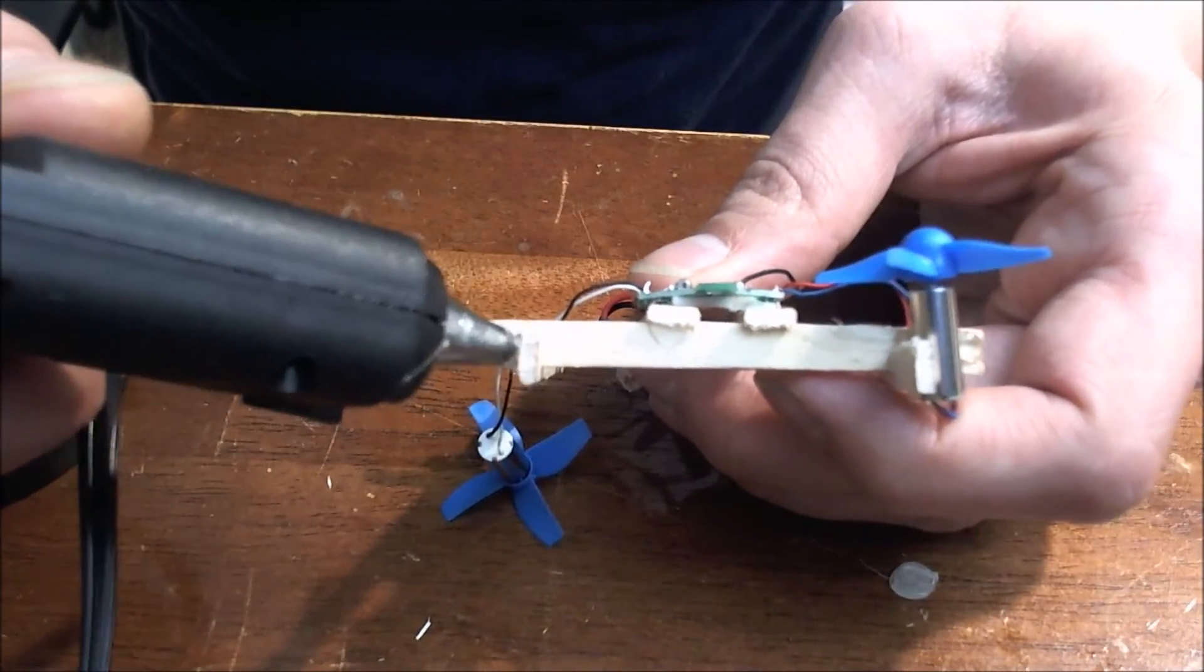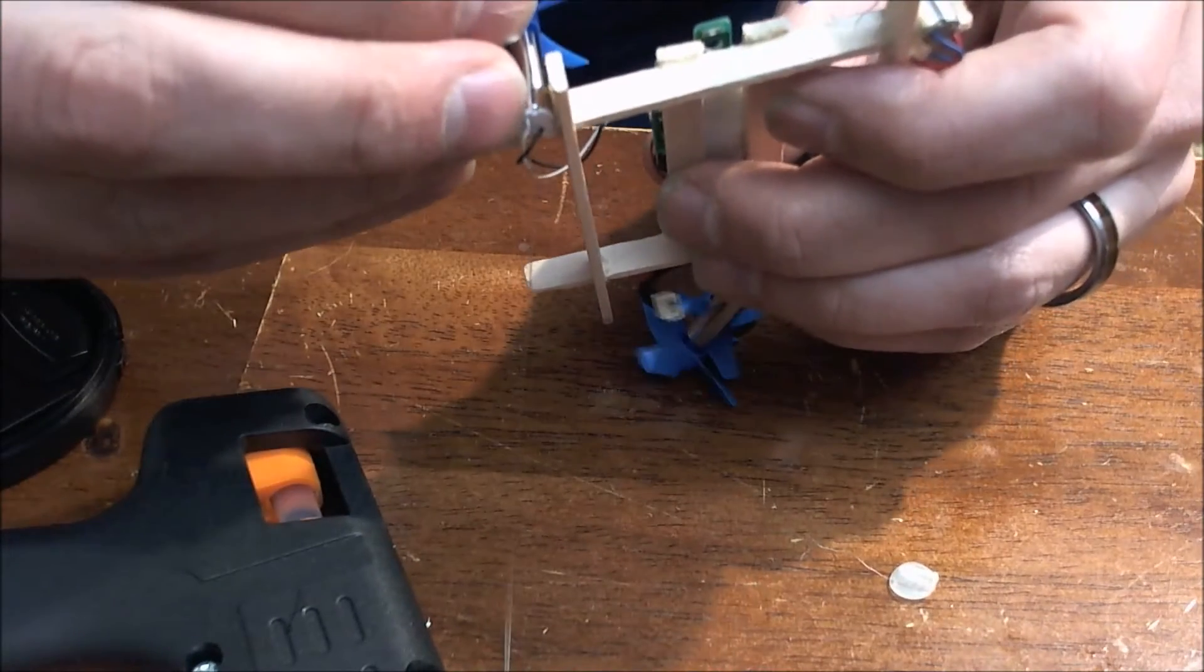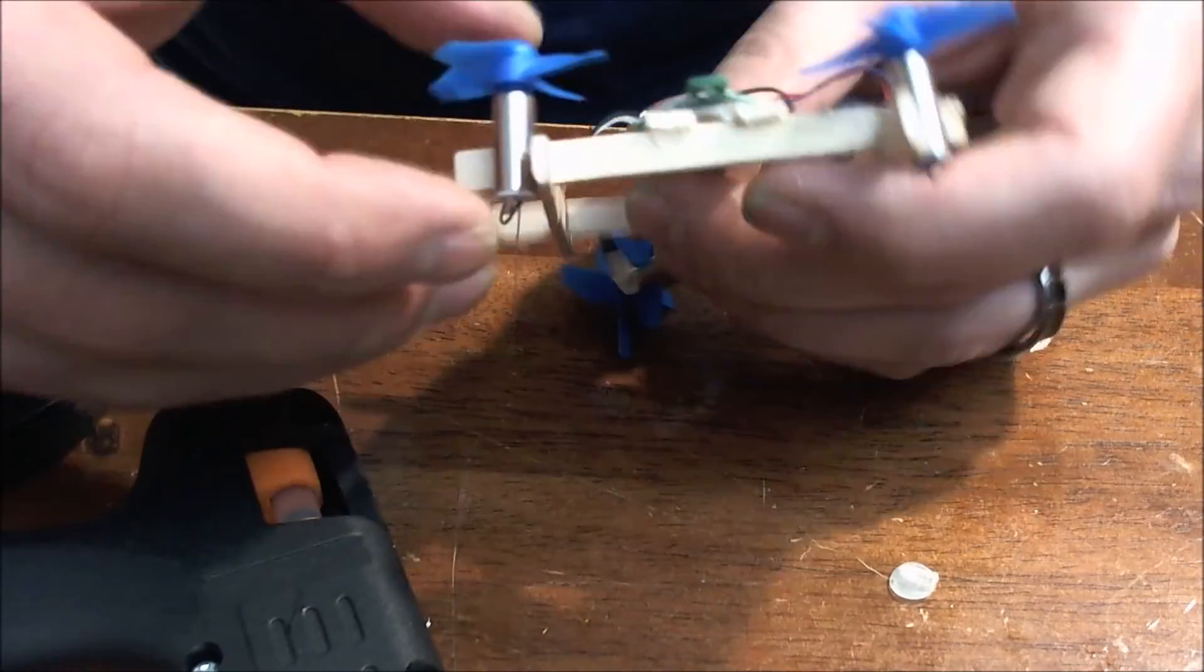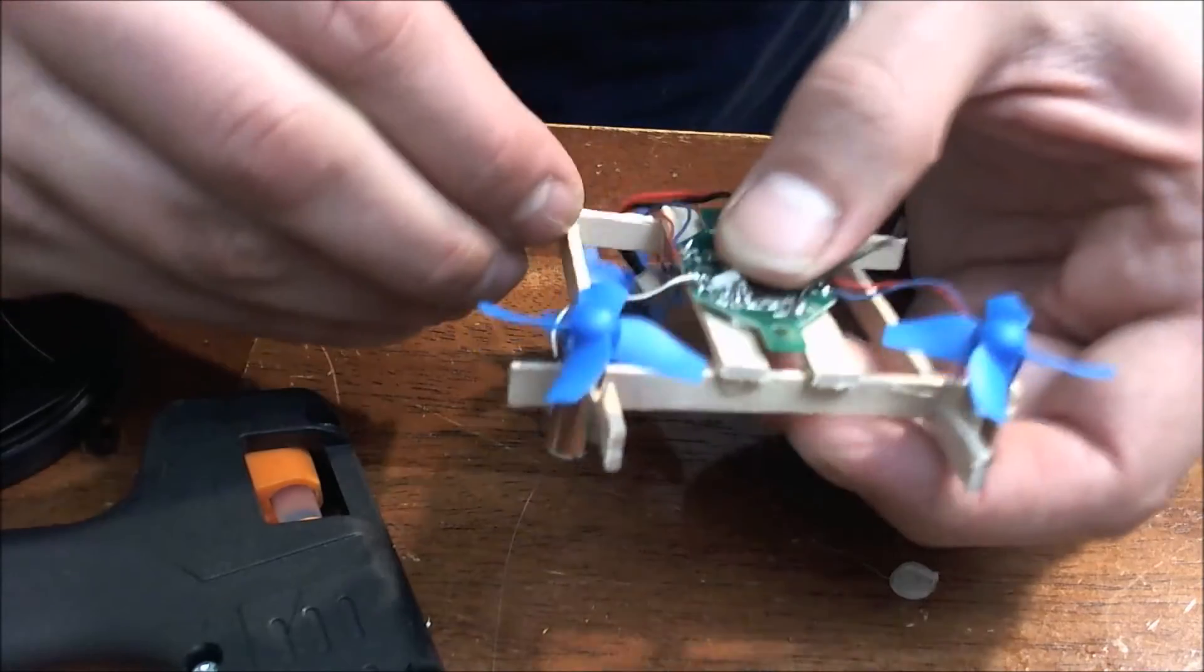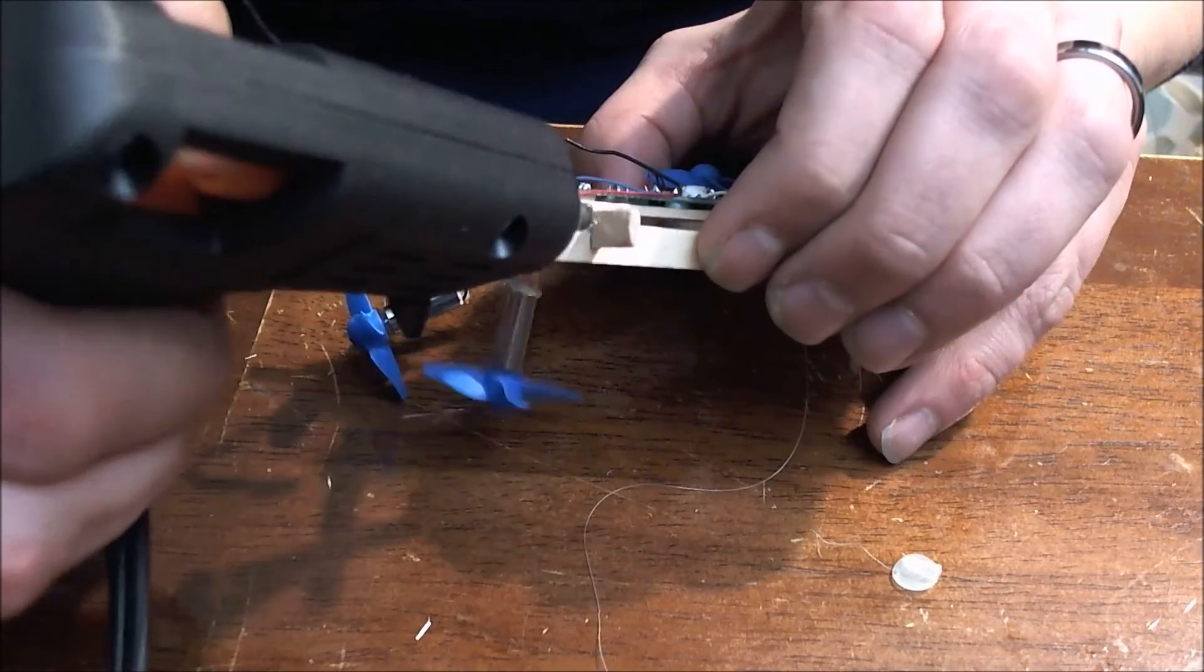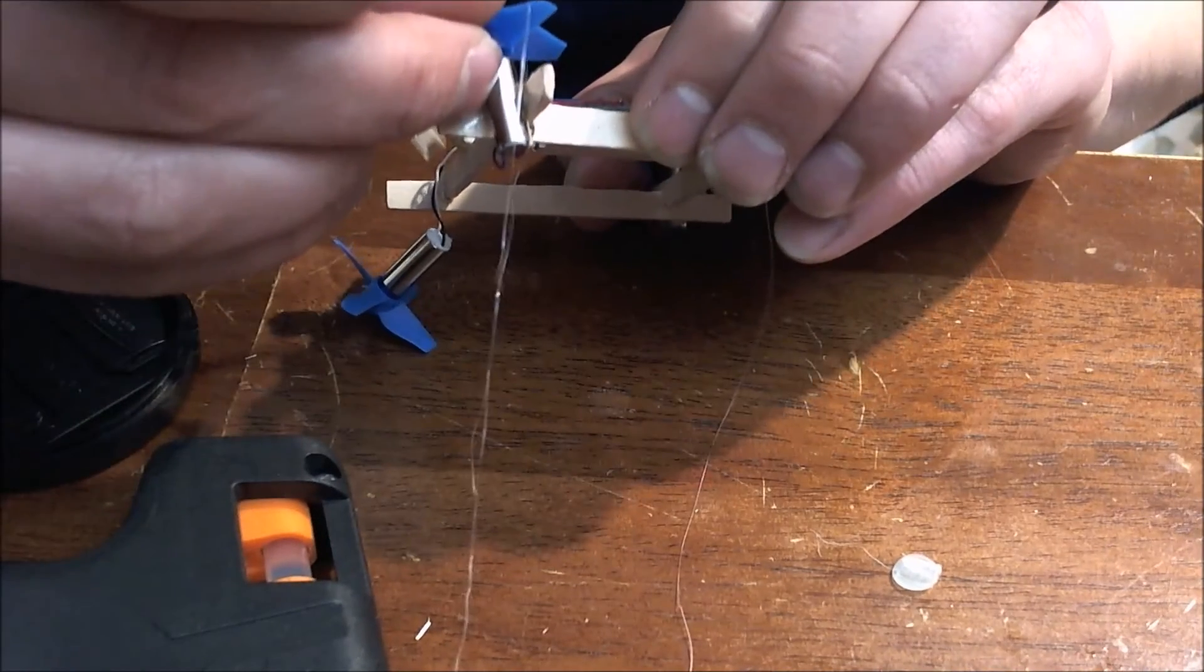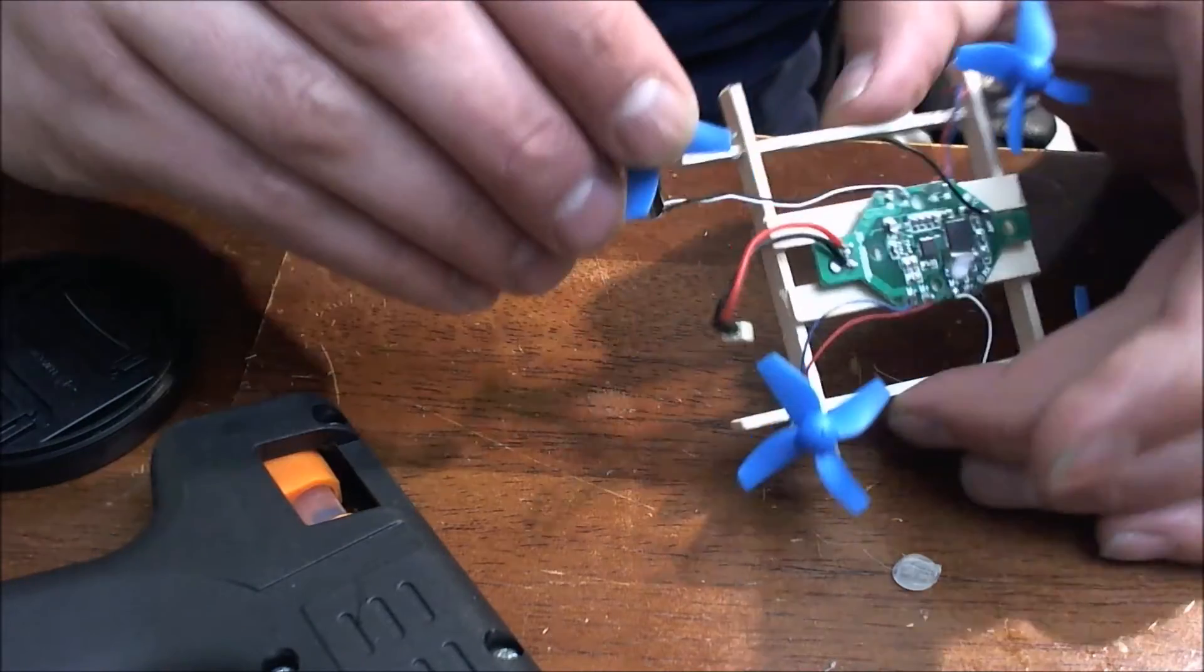Go ahead and come over to the next corner. Get down a little bit of glue. I'm going to run the wire underneath. Set it in there. There's number two. So now we'll get the other ones glued on. Let's install this last motor real quick.